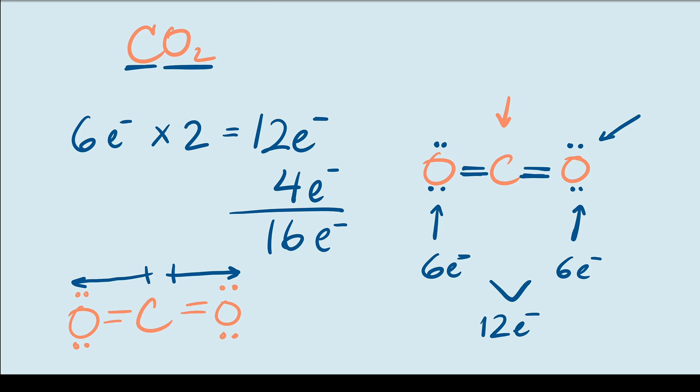Anyway, while carbon dioxide does have 2 polar bonds, they cancel out perfectly with one another due to the symmetry of the molecule. So these cancel out.